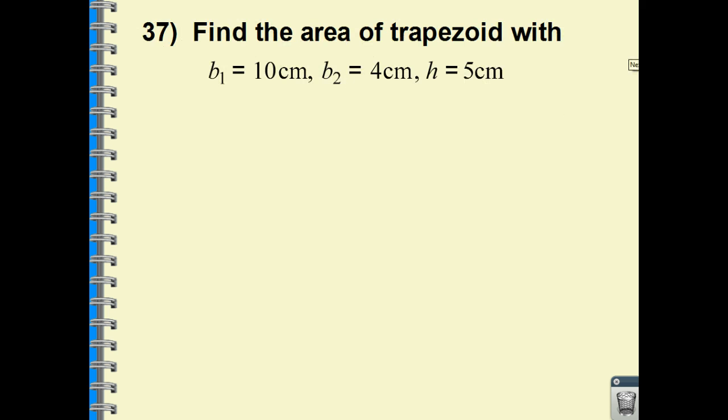Moving right along, we are at number 37 now. Area of a trapezoid. The formula for the area of a trapezoid—looks like they didn't give it to you. I'll write it out here. The formula is a half multiplied by the sum of the top and the bottom of your trapezoid multiplied by the height.